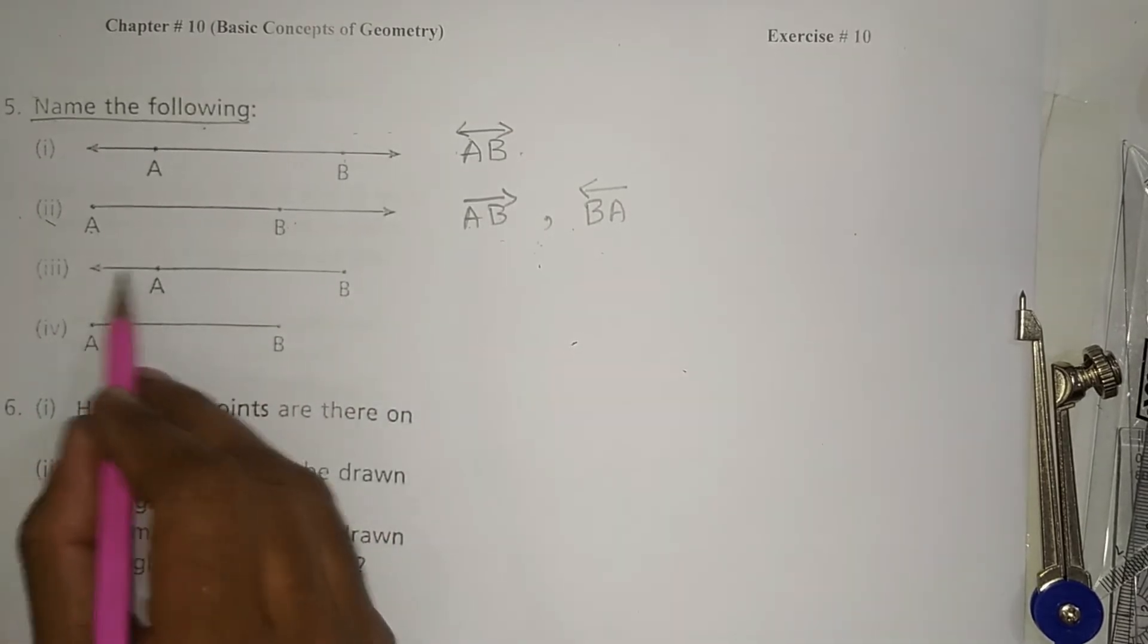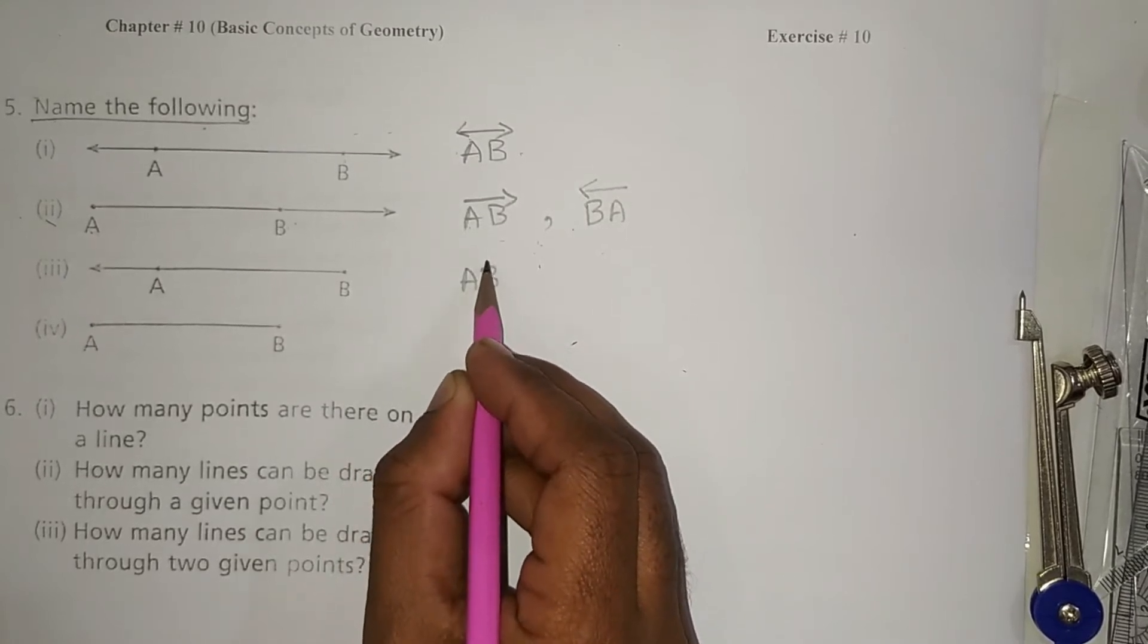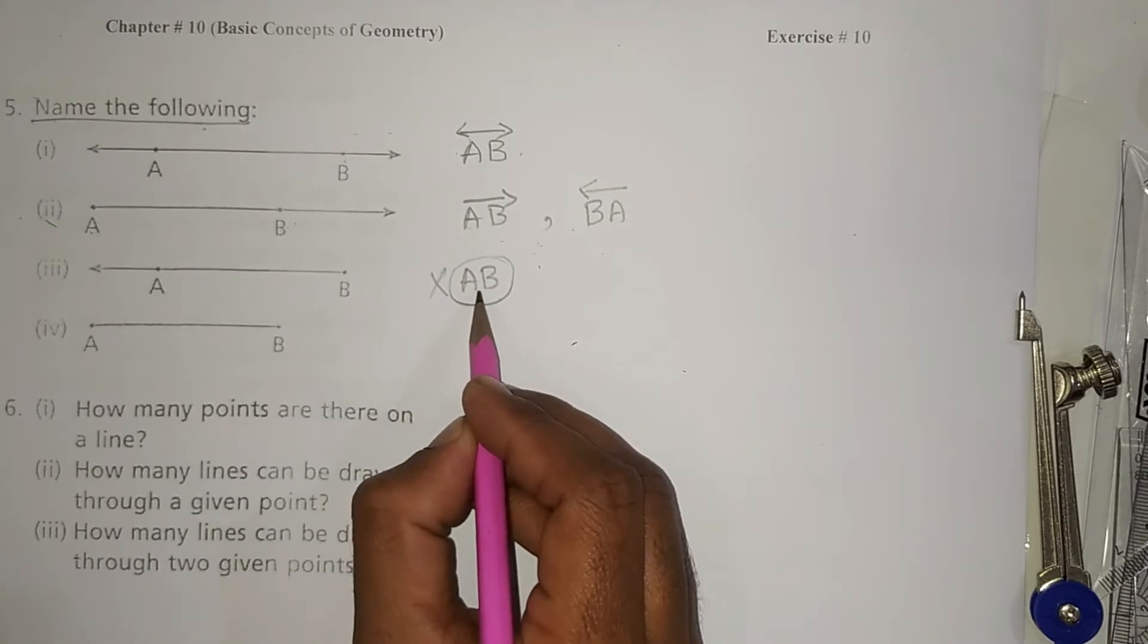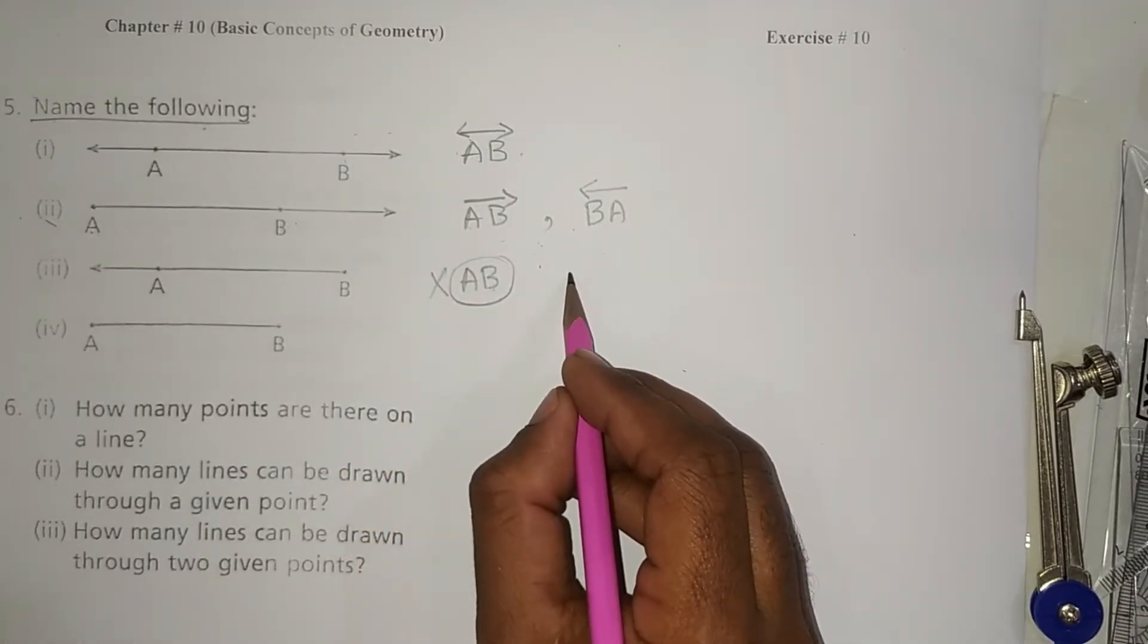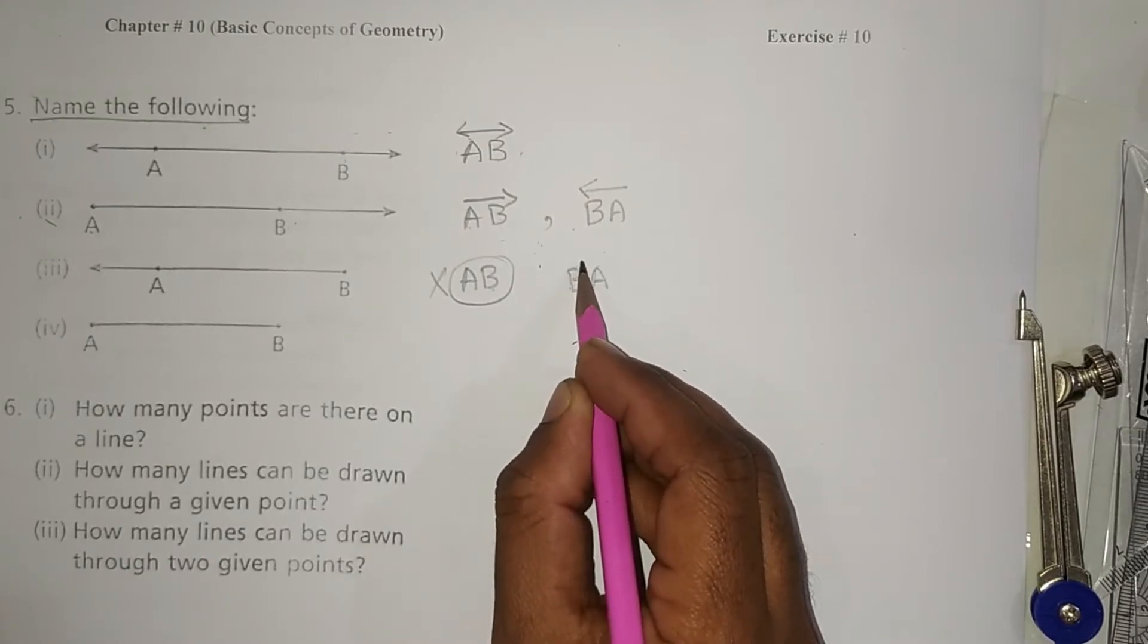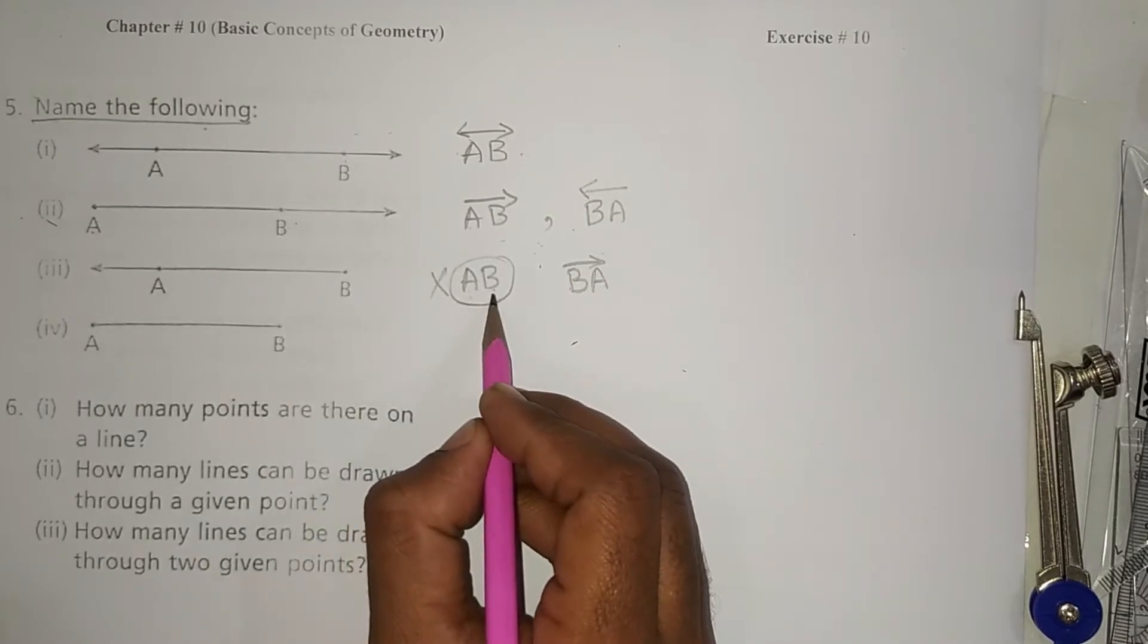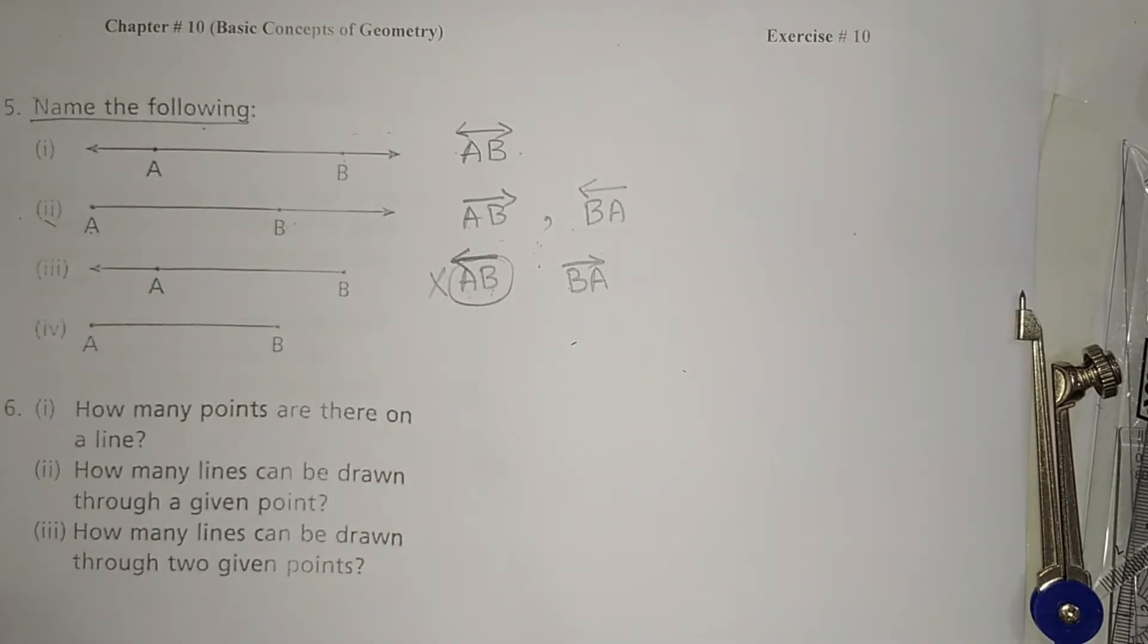This line, this is a ray AB. No, I am writing wrong. This is AB. How can I write BA? It goes like this. I can write like this also, but I have to place the arrow here like this.